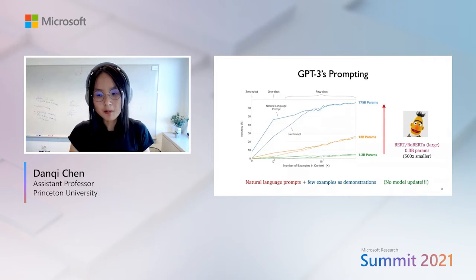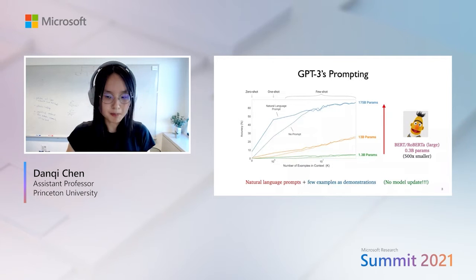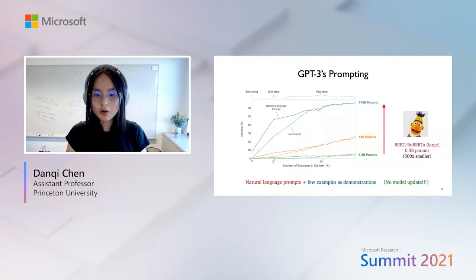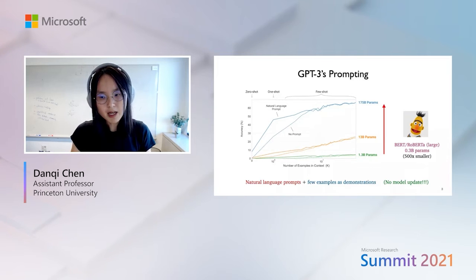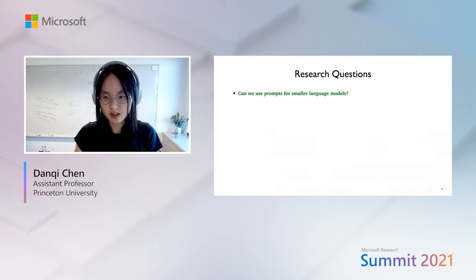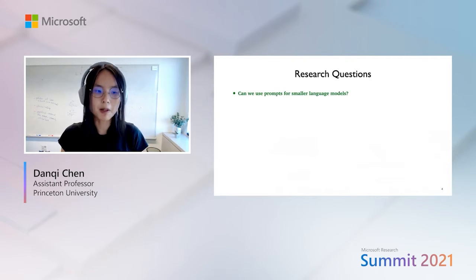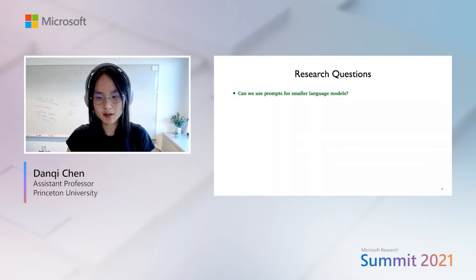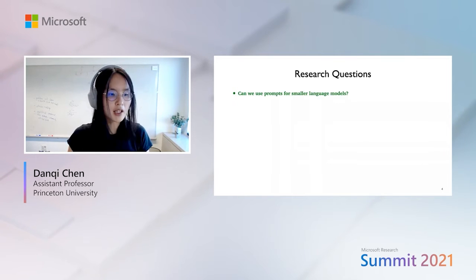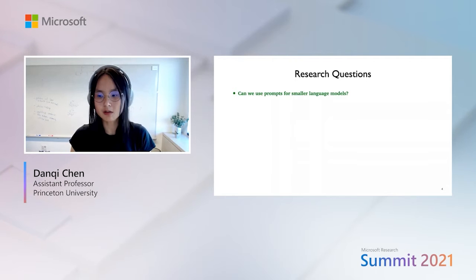However, the commonly used NLP models such as BERT or RoBERTa have only 0.3 billion parameters, which is basically 500 times smaller compared to GPT-3. So in the past year, there has been a lot of discussion and research around prompt tuning, and we want to understand whether we can borrow this brilliant prompting idea from GPT-3 and apply it to smaller language models such as BERT or RoBERTa.